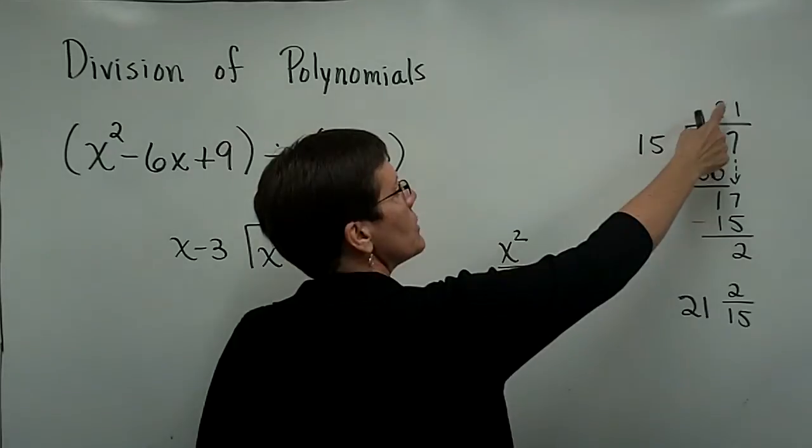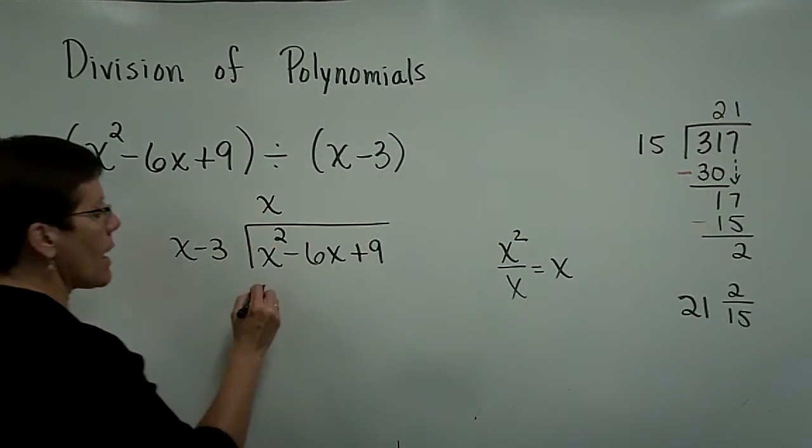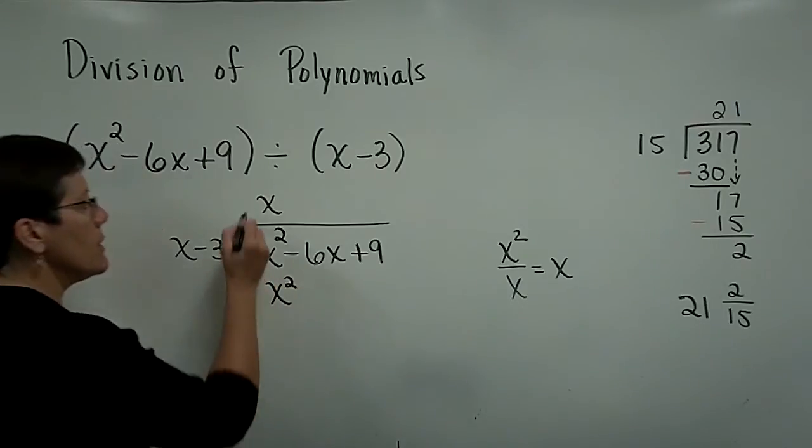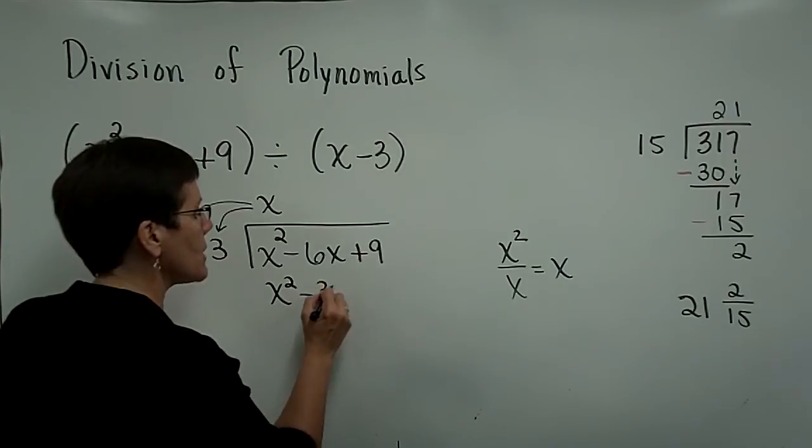Remember up here, I put the 2 here, and I took 2 times 15 and gave me 30. I'm going to take that x times that x and put it down here. So I'm multiplying that, and the x times a minus 3 is a minus 3x.